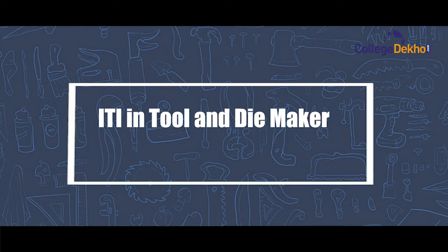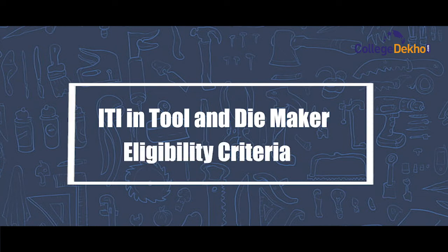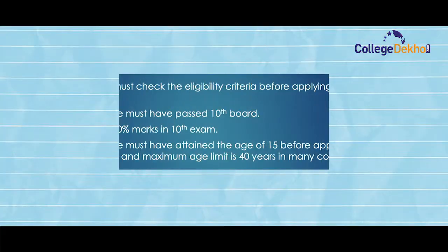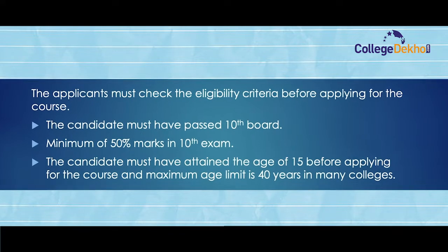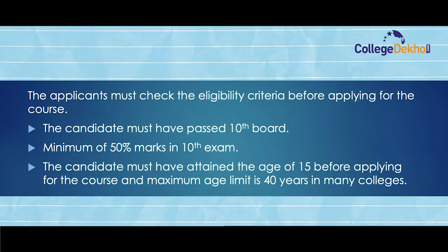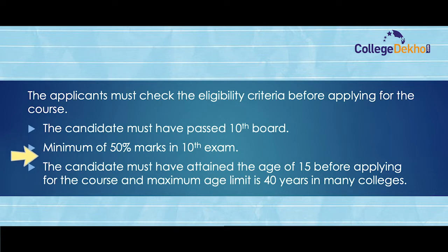ITI Tool & Die Maker eligibility criteria: The applicants must check the eligibility criteria before applying for the course. The candidate must have passed the 10th board with a minimum of 50% marks. The candidate must have attained the age of 15 before applying for the course, and the maximum age limit is 40 years in many colleges.